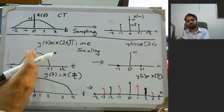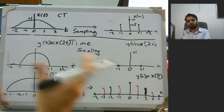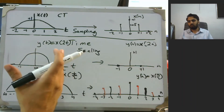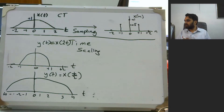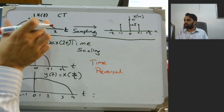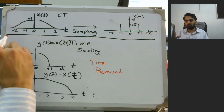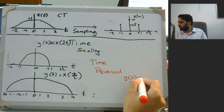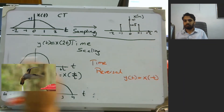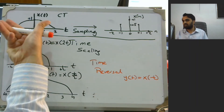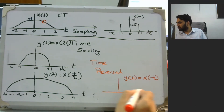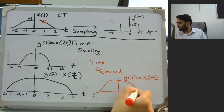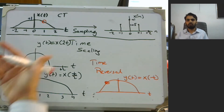Another important property related to time scaling is time reversal. Note that these time operations in continuous time are almost exactly repeated in discrete time, so we will ignore the discrete-time operations for the remaining part of the video. In time reversal, given signal x(t), we want y(t) = x(-t). This means the signal flips in time. If we put a marker on the signal and plot y(t), the marker appears on the opposite side — the signal has been flipped in time.